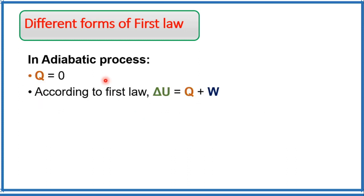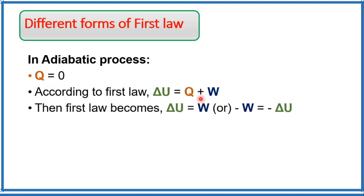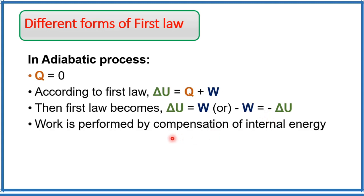In an adiabatic process, there is no exchange of heat between the system and surroundings. Therefore Q = 0. Substituting Q = 0 into the first law gives ΔU = W, or equivalently −W = −ΔU. Here, −W is the work done by the system and −ΔU indicates a decrease in internal energy. That means in an adiabatic process, the system performs work by utilizing its internal energy, since there is no supply of heat from outside.